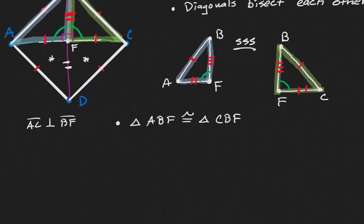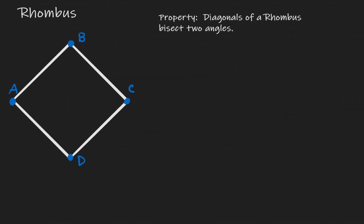Let's take a look at another property. What we want to show now is that diagonals in a rhombus also bisect two angles. Let's label the information: all sides are congruent to each other. Let's introduce those diagonals. We have already shown that diagonals bisect each other, so let's introduce a point F such that AF is congruent to FC and BF is congruent to FD.